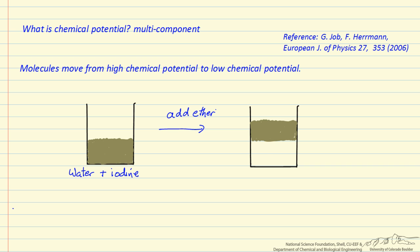We have water on the bottom and ether on the top. And then what we see is the ether becomes brown because the iodine dissolves in the ether and leaves the water, and the water becomes clear again.